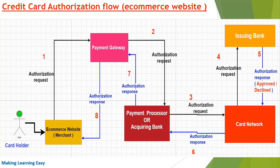Once all checks pass, the issuing bank approves the request and sends the response to the card network. If the issuing bank finds any issue or the amount is insufficient, it declines the authorization request and sends that response to the card network. The issuing bank also communicates to the customer via mail or SMS. The card network forwards the response to the payment processor (step six), which forwards it to the payment gateway (step seven), which then forwards it to the merchant. Based on the response, the e-commerce website allows the customer to place or reject the order.